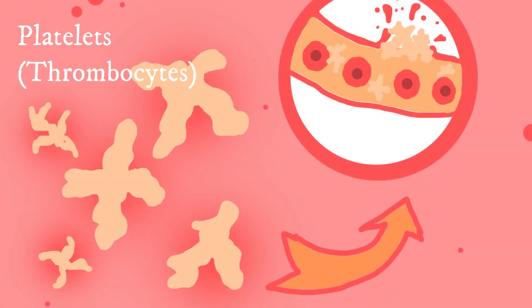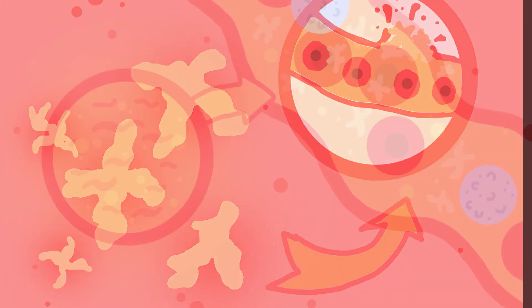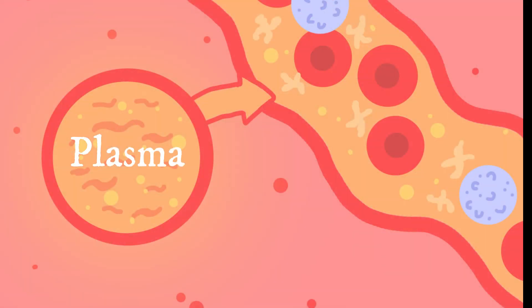Platelets are small fragments which heal wounds and injuries by sticking together. Plasma is a fluid which helps in the transportation of all the other blood components.